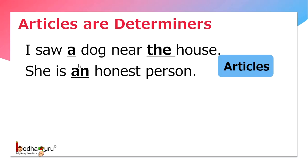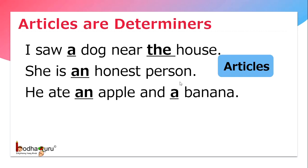She is an honest person. Here, 'an' is an article and it is a type of determiner because it will always come before the noun or noun phrase. He ate an apple and a banana. Here, 'an' and 'a' are articles.